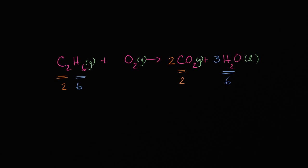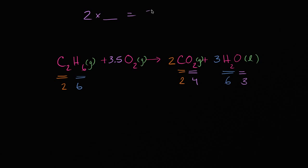Now let's go to the oxygens. On the left-hand side I have two oxygens. On the right-hand side I have two times two — that's four oxygens from CO₂ — and three water molecules each with one oxygen atom, so three more. That gives seven oxygen atoms on the right-hand side, but only two on the left. Two times what equals seven? Two times 3.5 equals seven, so I multiply the O₂ by 3.5. Now I have seven oxygen atoms on both sides.